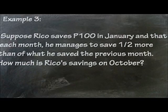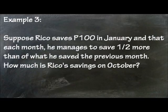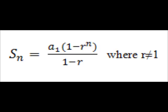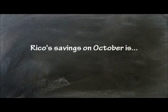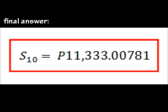That's pretty much it — it isn't hard at all, right? Here's the last example. Suppose Rico saves 100 pesos in January and each month he manages to save one-half more than what he saved the previous month. How much is Rico's savings in October? Substituting into the formula S sub n equals a sub 1 times quantity 1 minus r raised to n, all over 1 minus r, we get S sub 10 equals 100 times quantity 1 minus 3 over 2 raised to 10, all over 1 minus 3 over 2. Rico's savings in October is 11,333.00781 pesos.